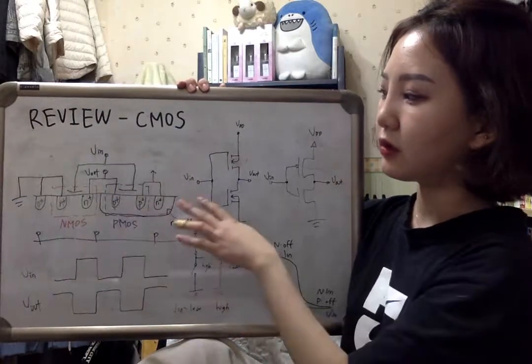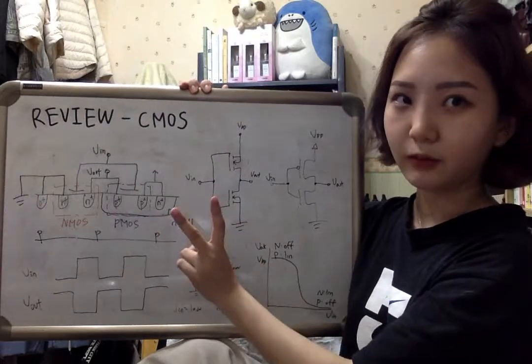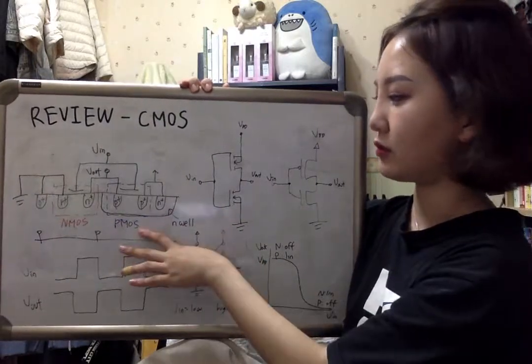We make N-well in those bodies so we can get two types of MOSFETs: NMOS and PMOS.